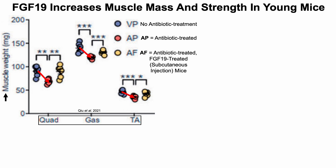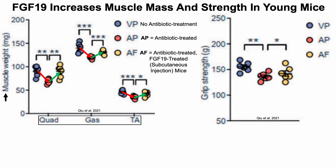In the AF group — mice injected with FGF-19 — there were significant increases in muscle mass for each of the three muscles in antibiotic-treated mice. For muscle strength, antibiotics reduced muscle strength in the antibiotic-treated versus untreated groups, but in the FGF-19-treated antibiotic mice there was a small but significant increase in muscle strength. So we can see that FGF-19 increases muscle mass and strength in young mice.